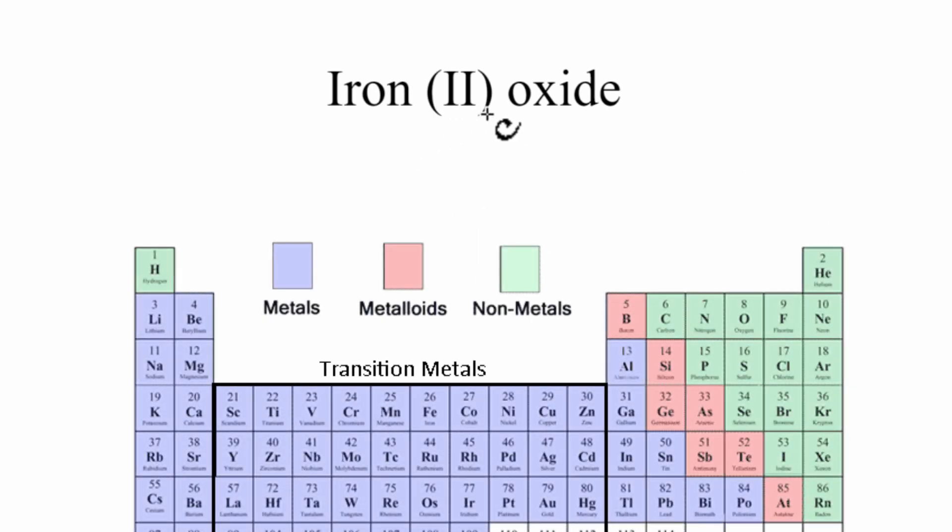To write the formula for iron (II) oxide, we'll go to the periodic table, look up iron, that's Fe, and then oxide, we're looking for oxygen, that's O, FeO.